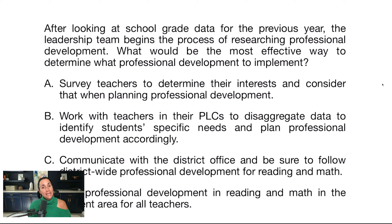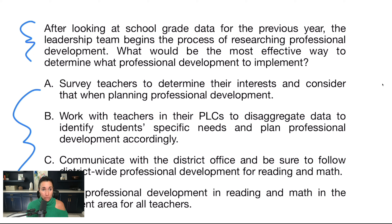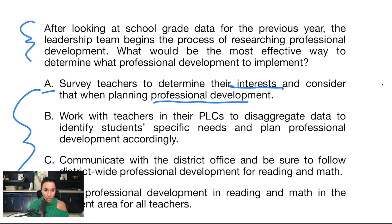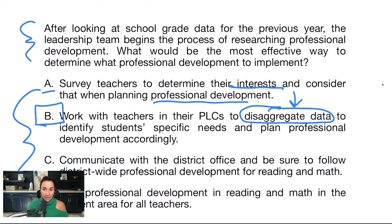This one comes from my SLLA 6990 study guide. This test is for school leaders — if you're trying to become an assistant principal, you will take a test like the SLLA 6990 or the Praxis 5412, and every question is pretty much a scenario question like this. So you're going to want to work backwards on every question on this exam. Answer A: survey teachers to determine their interests and consider that when planning professional development. I like A — surveying teachers is effective and we do want to plan professional development around teacher interest. Answer B: work with teachers and their PLCs to disaggregate data to identify students' specific needs and plan professional development accordingly. The words disaggregate data are good words on this exam. This is better than A because we're actually looking at data to make decisions.